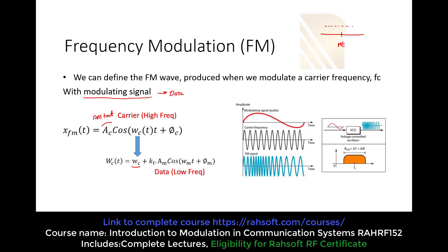The frequency is going to change within a range. That range is determined by KF, which is the coefficient. If we increase this coefficient, it means we are increasing the frequency variation. So the frequency varies between KF times AM and minus KF times AM, meaning the carrier frequency goes from omega_C plus KF·AM down to omega_C minus KF·AM. This range shows how much the carrier frequency will deviate.